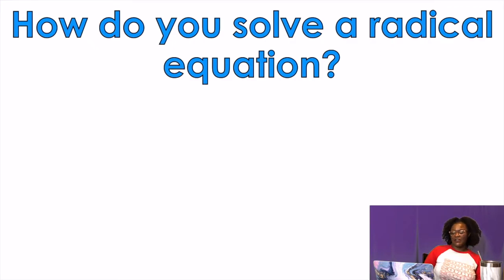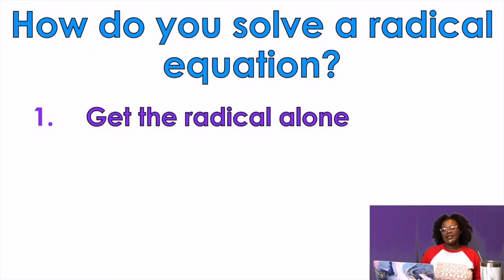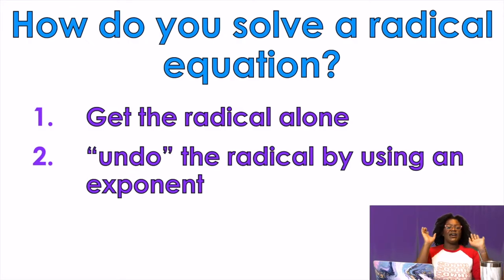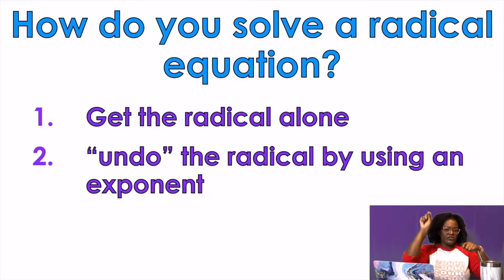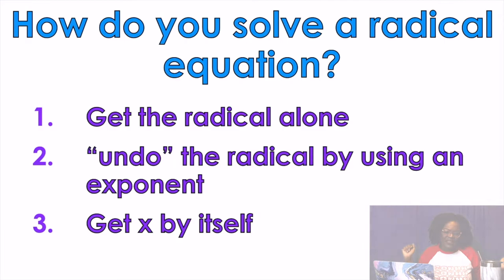How do you solve a radical equation? Step one: get the radical alone — that means isolate the radical. Step two: undo the radical sign by using an exponent. So just like when you have an x squared and you want to get rid of the squared, you take the square root; now when you have a square root, you square it to get rid of it. Step three: get x by itself. After the radical's gone, it's a regular equation.